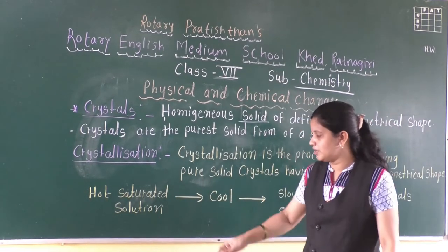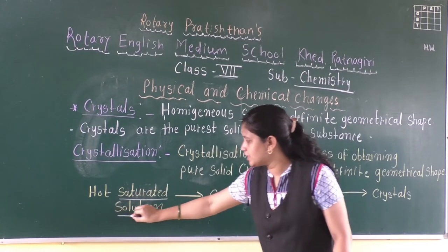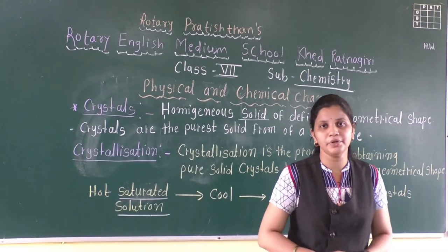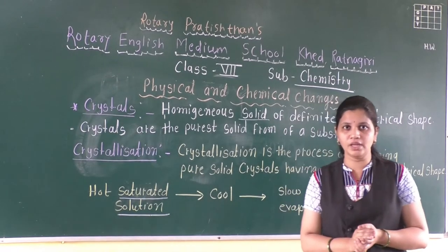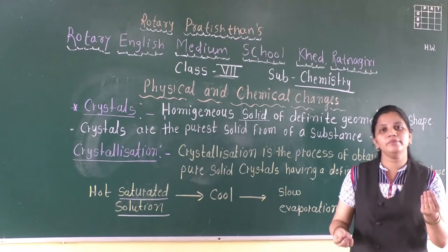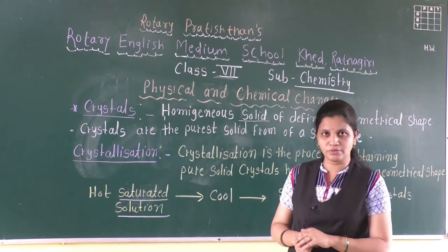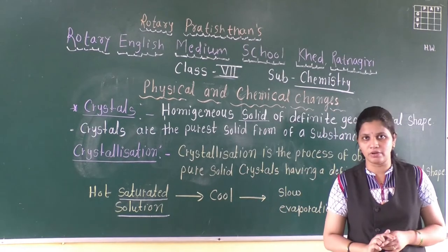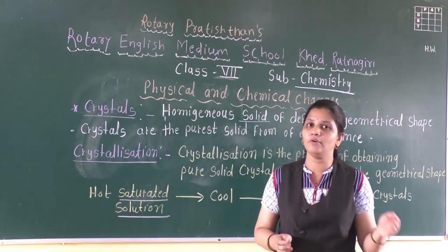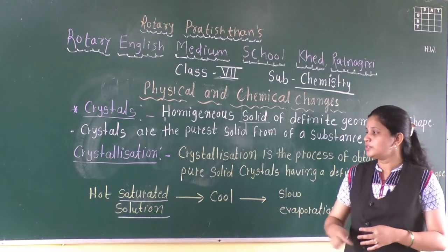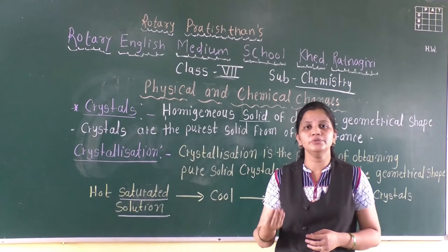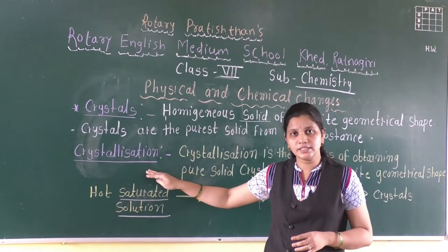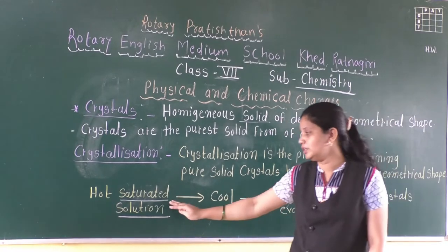Now the word used here is saturated solution. Saturated solution means what? No more solute can be dissolved in that particular solution. For example, a salt solution — if you take 5 ml of water and add 2 or 3 tablespoons of salt, the salt will dissolve. But if you add more, it will not dissolve. That is what we learned in the last lesson. So saturated solution means no more solute can be dissolved. That solution is known as a saturated solution. For this experiment we need a hot saturated solution.